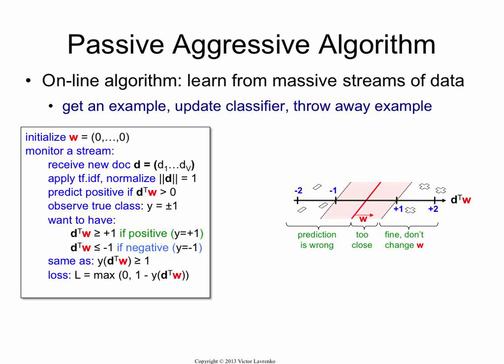Now, how do we enforce it? Well, we compute a loss function. So basically, we would like that product, d transpose w times plus or minus 1, we want that to be over 1, always, for all the examples that we get. So if we have something that is smaller than 1, we're going to take that as a loss. If we have something that is 1 or bigger, then we're going to ignore it. So that's what this max represents.